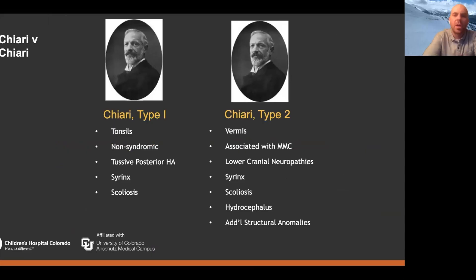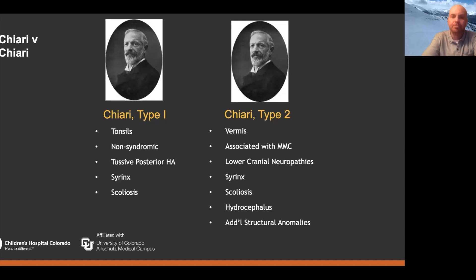One thing I wanted to start with is that even though Hans Chiari described both Chiari 1 and 2 — and obviously 3 and 4, which we won't really talk about — they're very distinct entities, and certainly the populations in which they occur are really distinct. So while they do have a number of things in common, it's important to recognize how different they really are. Even though they have very similar sounding names, they're really quite different entities.